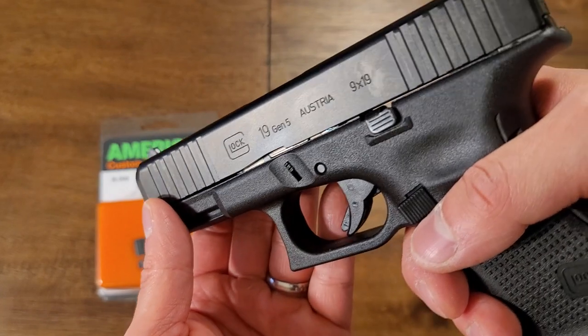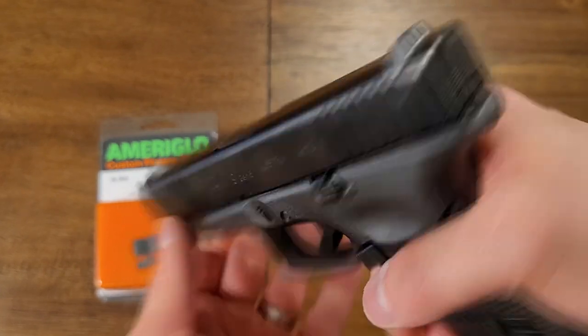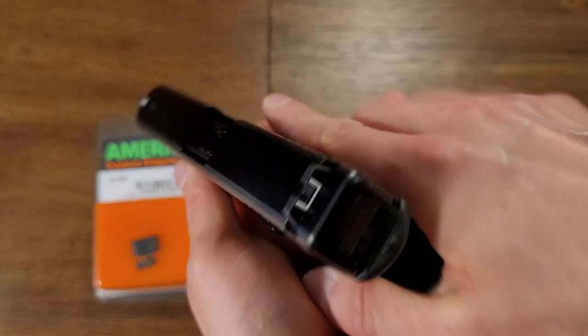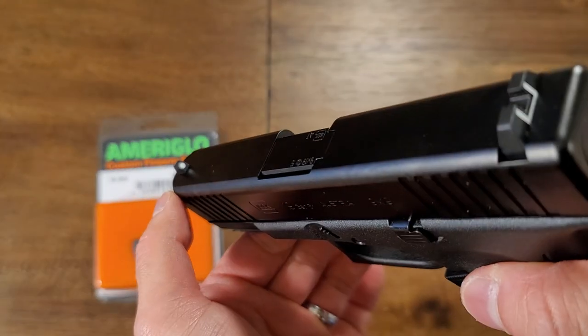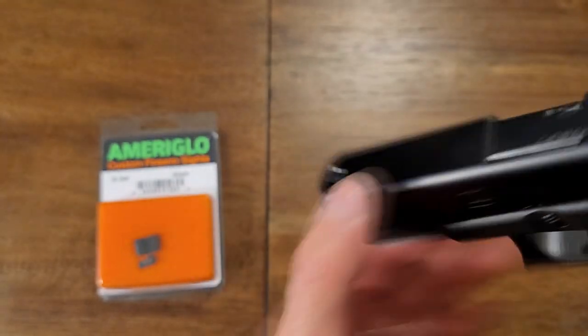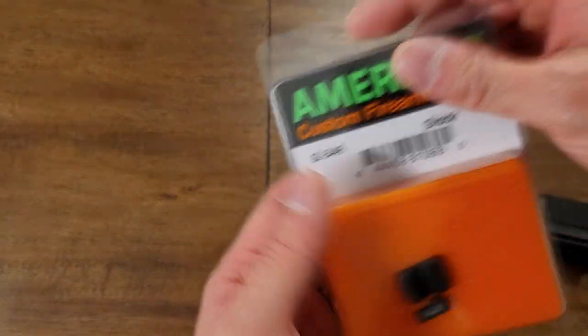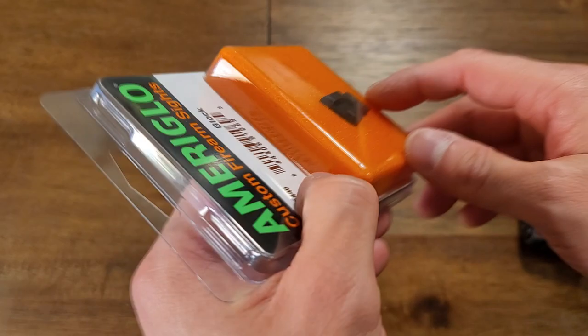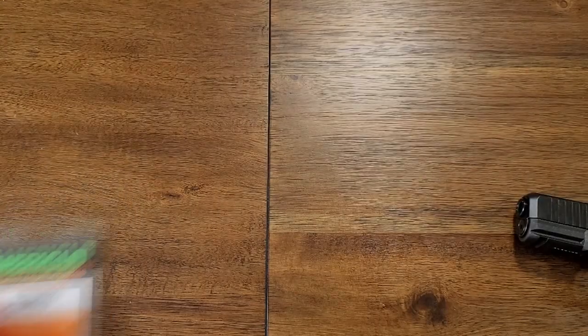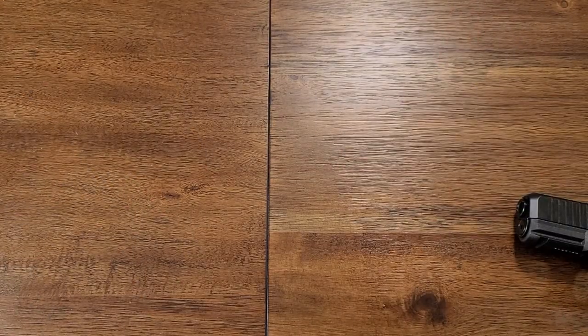Hey what's going on YouTube? In this video I'm going to be using the Glock 19 Gen 5 to show how to change your factory Glock sights to aftermarket night sights. In this case I'm going to be using the Ameriglow Spartan operator sights. So without further ado let's get started with the tools that you're going to need.